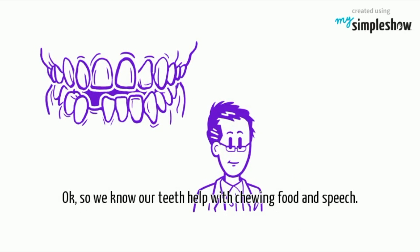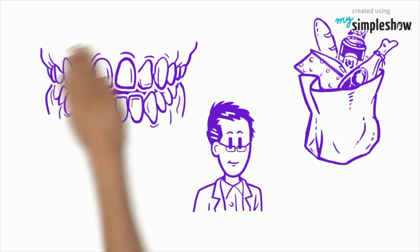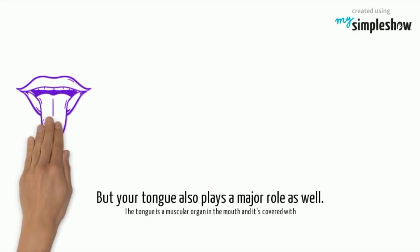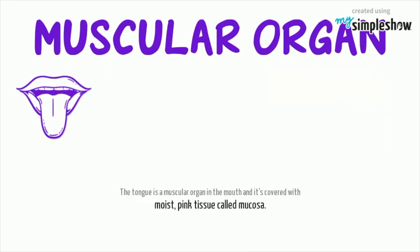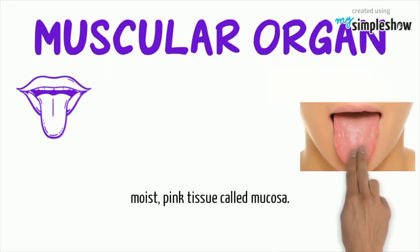Okay, so we know our teeth help us with chewing food and our speech, but your tongue also plays a major role as well. The tongue is a muscular organ in the mouth and is covered with moist pink tissue called mucosa.